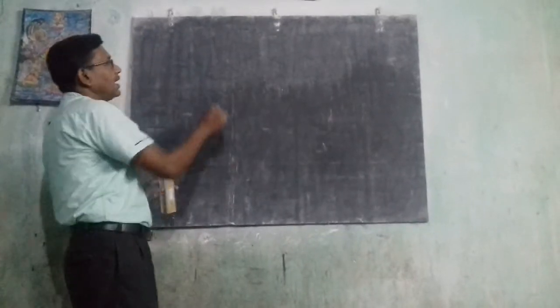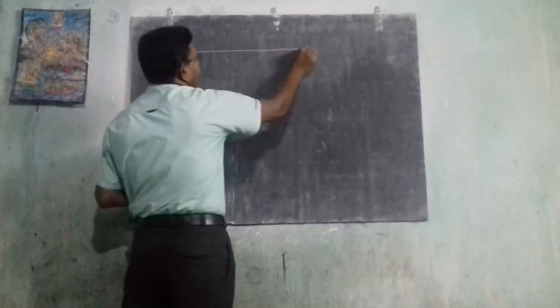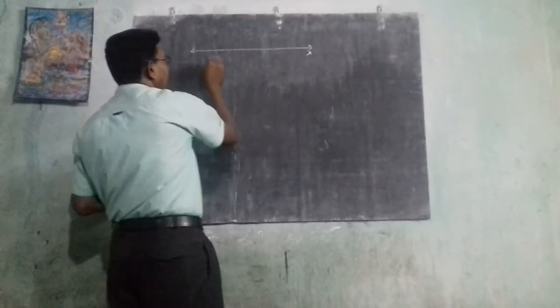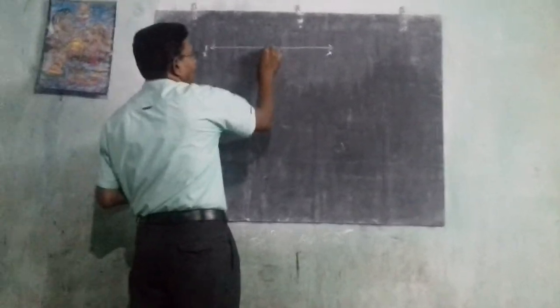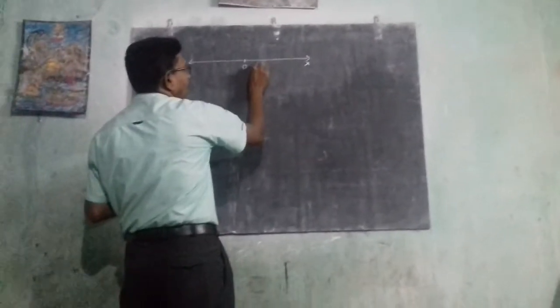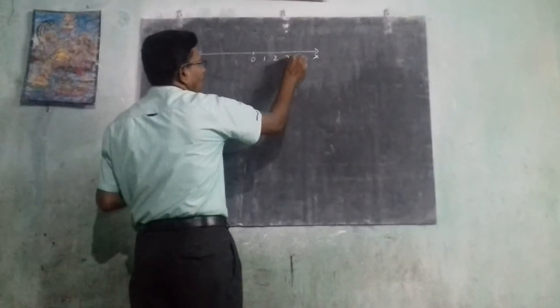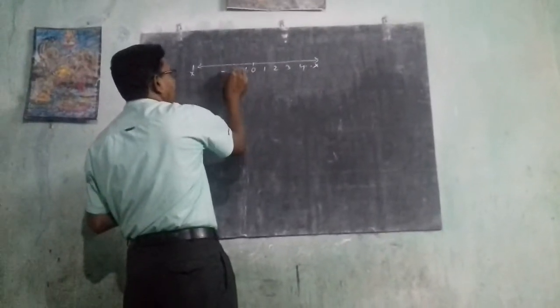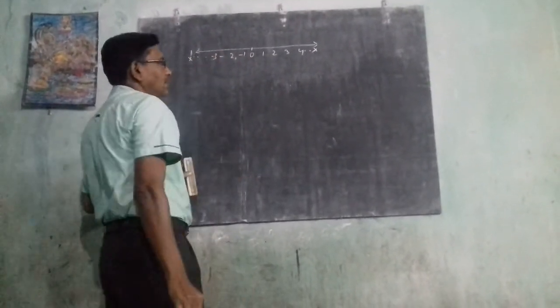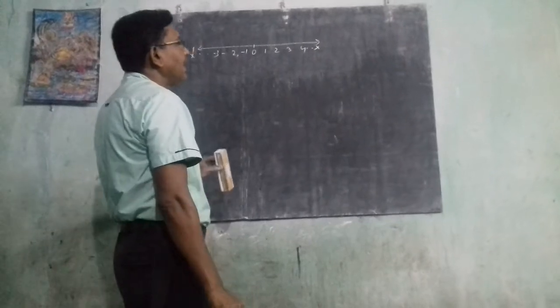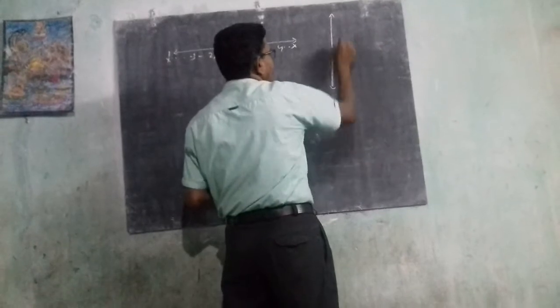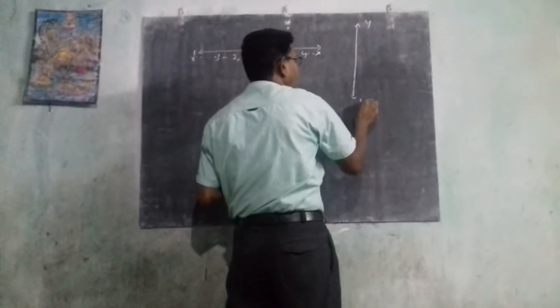First we take the number line. Here I take a horizontal line, which we call x and x-dash. Here is our 0. On the positive side: 1, 2, 3, 4, and so on. On the negative side: minus 1, minus 2, minus 3. Now I take a vertical line, which is y and y-dash.